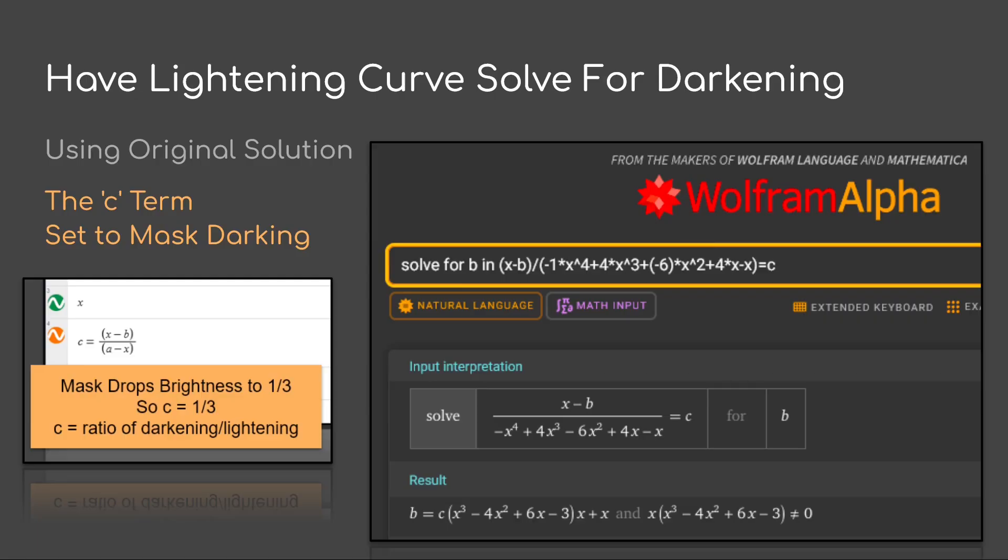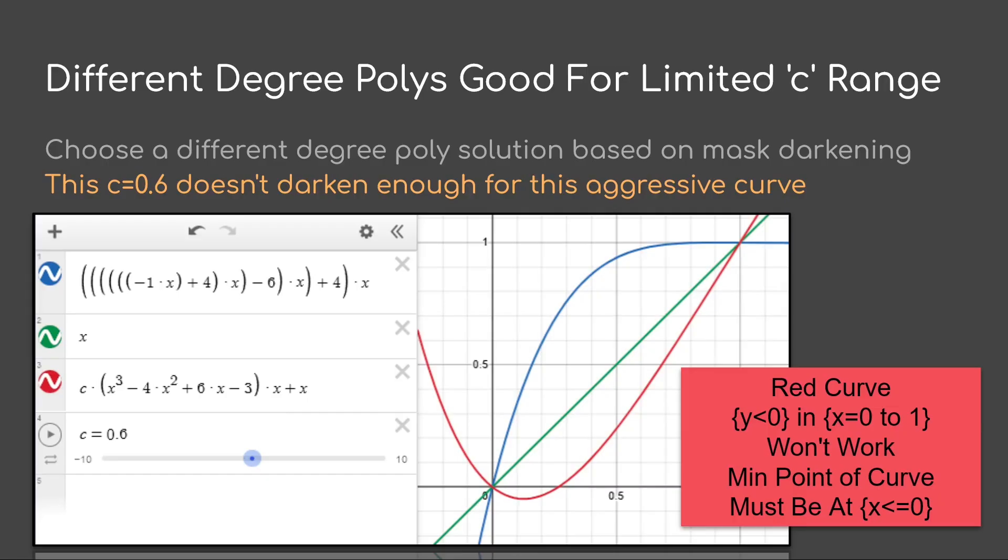In this case, we want a solution that varies based on c. c is the term we're setting to the mask darkening effect. We can plug the equations into Wolfram Alpha and it will give us the solution. Their solution is simplified. You'll probably want to expand that and then convert it back into Horner form.